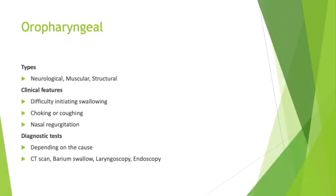Now I want to explain about the etiologies of dysphagia — just a summary of the different categories. In the oropharyngeal type, which includes neurological, muscular, and structural causes, the clinical features basically include difficulty initiating swallowing, choking or coughing, and nasal regurgitation. The diagnostic tests, depending on the cause, could be CT scan, barium swallow, laryngoscopy, and endoscopy.